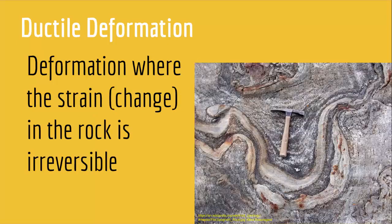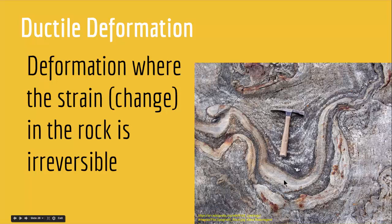After that comes ductile deformation. This stage is where the deformation — the strain or the change in the rock — is irreversible. In the case of the spring, you pull it so hard that it does not come back to its original shape. Just like that, when rocks are in the right condition and have the right properties, when you put enough stress on them, they don't come back to their original shape. As you can see in this picture, this strata was squeezed from both sides and deformed, but it did not go back to its original shape when the stress was removed. So ductile deformation is where the strain in the rock is irreversible — there is no way to redo the changes.